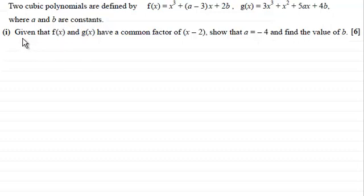And what we've got to do is, given that f(x) and g(x) have a common factor of (x-2), show that a equals minus 4 and find the value of b. So if you'd like to have a go at this, I'll just give you a moment to pause the video.